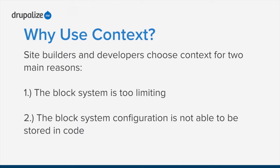So why would we want to use Context? One of the biggest reasons is that the block system is just too limiting. You can basically place a block and maybe turn its visibility on or off depending on a few criteria, but you can't reuse blocks - once a block is in place, that's it. Also, the block system configurations are not able to be stored in code. That is a huge reason why we'd want to use the Context module - all the stuff we're going to be doing is exportable.